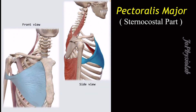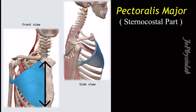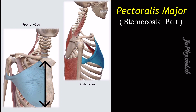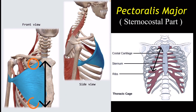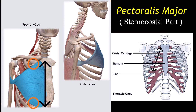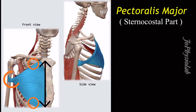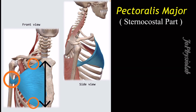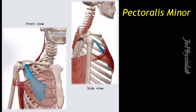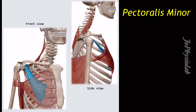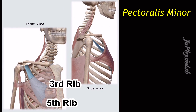The pectoralis major muscle, sternocostal part, attachment begins with the anterior surface of the sternum to the first to sixth costal cartilages of the ribs, and it inserts at the crest of the greater tubercle of the humerus.